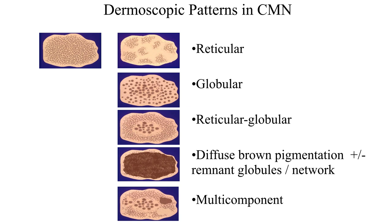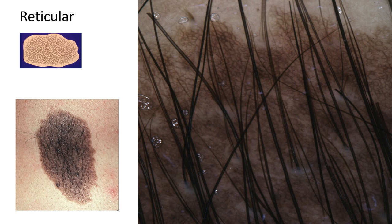The principal dermoscopic patterns in congenital nevi include reticular, globular, reticular-globular, diffuse brown structureless pigmentation — sometimes with remnant globules and network — and the multicomponent pattern.